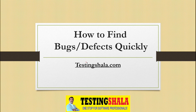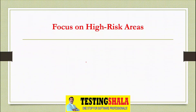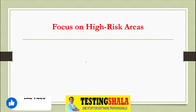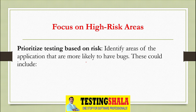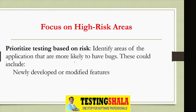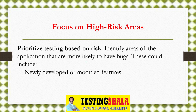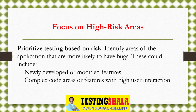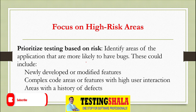The purpose of this video is to find out how to find bugs or defects quickly. The first method is we have to focus on risky areas of the application. If you focus on risky areas, you can find bugs very quickly because these are newly developed or modified features which are very risky in nature. If there is complex code implemented, that is also a risky area. Also, areas with a history of large numbers of defects are worth targeting to find bugs or defects quickly.